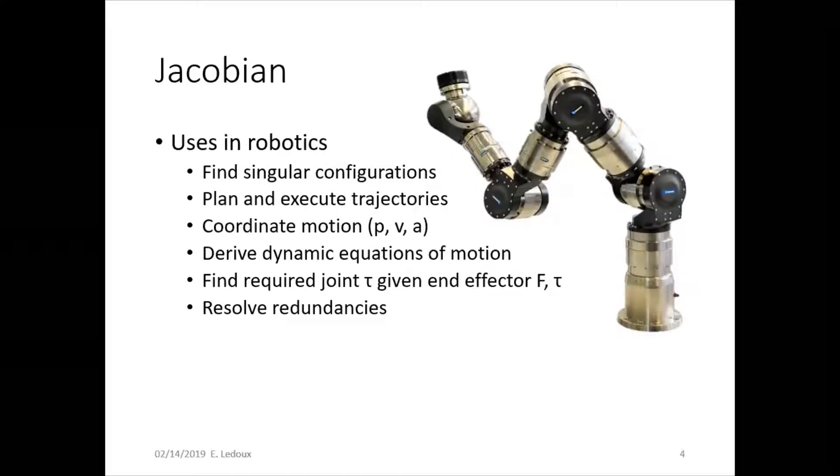The Jacobian actually has lots of uses in robotics. We can use it to find singular configurations, which is when a degree of freedom is lost, joint axes align and lock out.